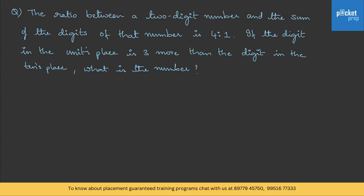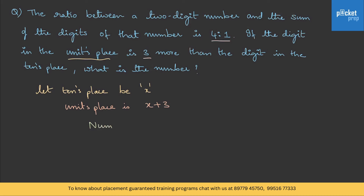The ratio between a two-digit number and the sum of the digits is 4:1. If the digit in the units place is 3 more than the digit in the tens place, what is the number? Units place is 3 more than tens place, so let tens place be x and units place be x + 3. The number is 10x + (x + 3) = 11x + 3.